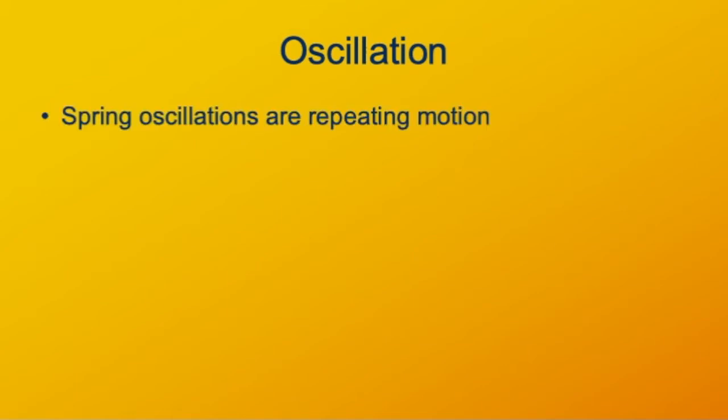Another kind of repeating motion that we've already studied is uniform circular motion. When an object is moving in a circle, that's just like a vibration in a sense, because it completes one cycle, and then when it gets back to where it began, it just keeps going over and over again.